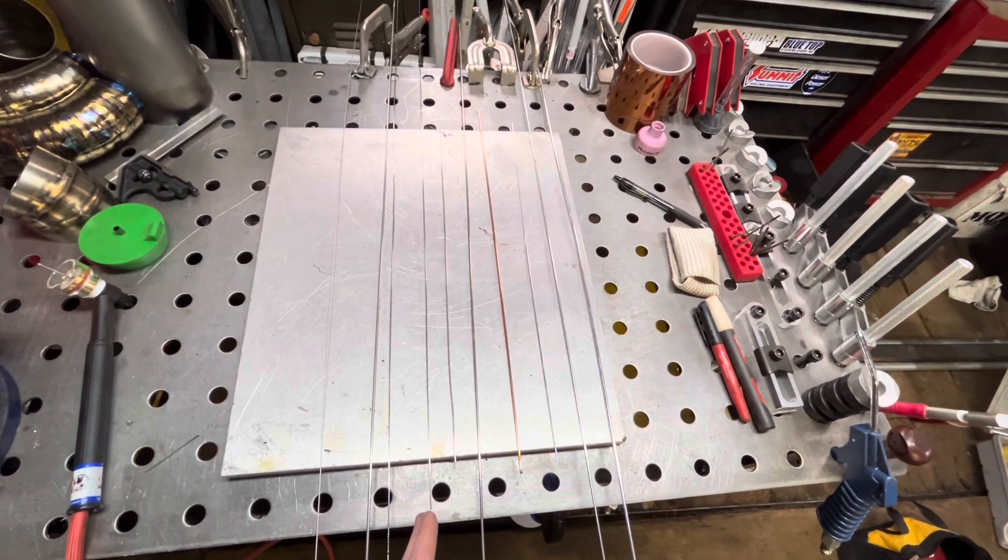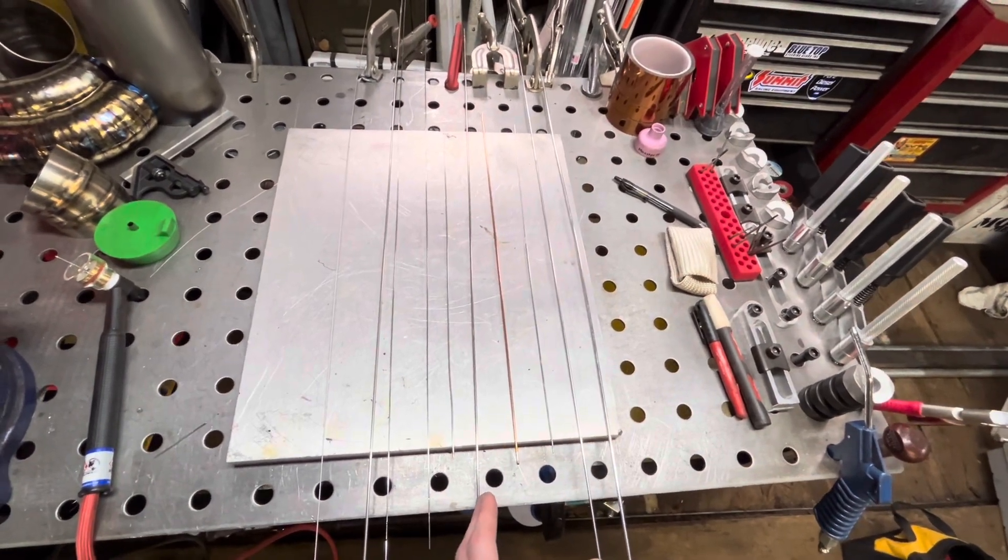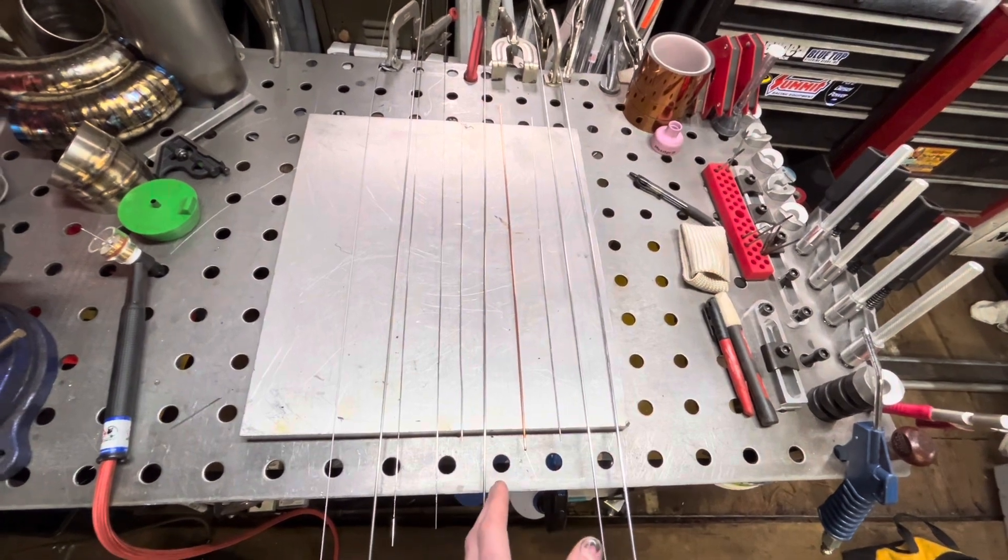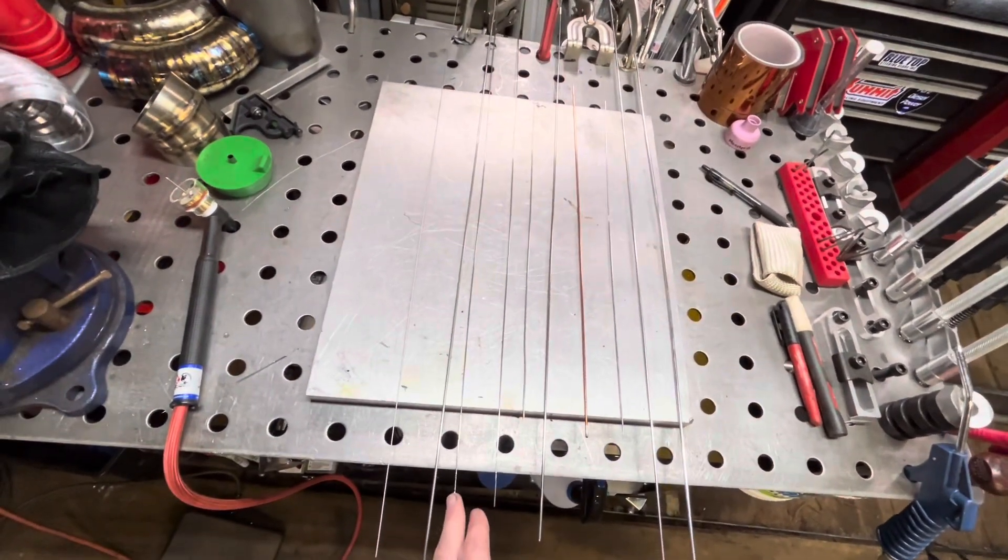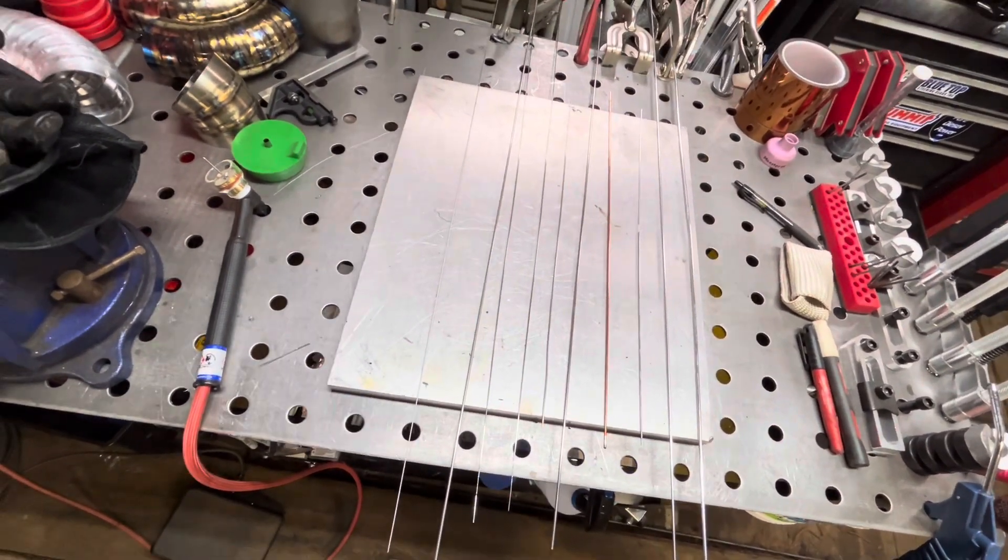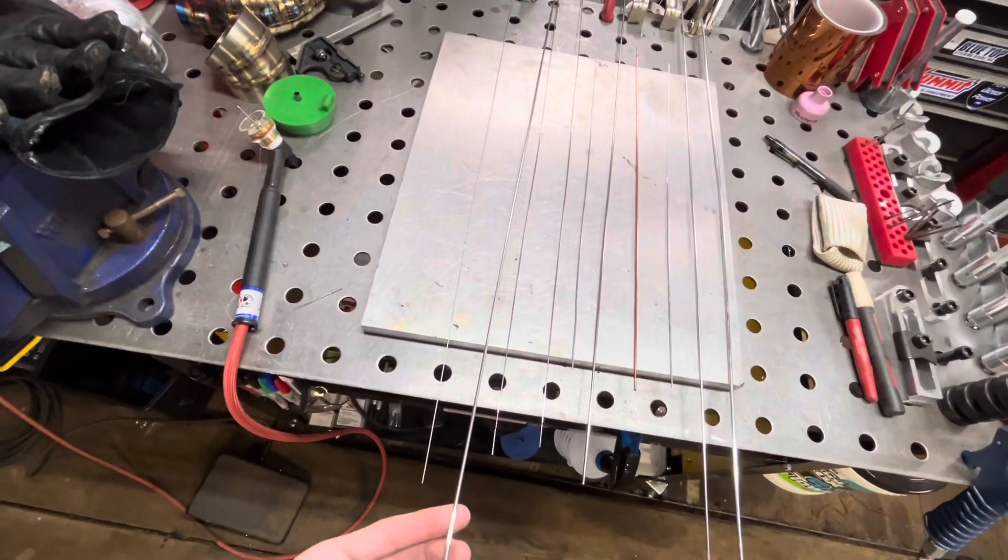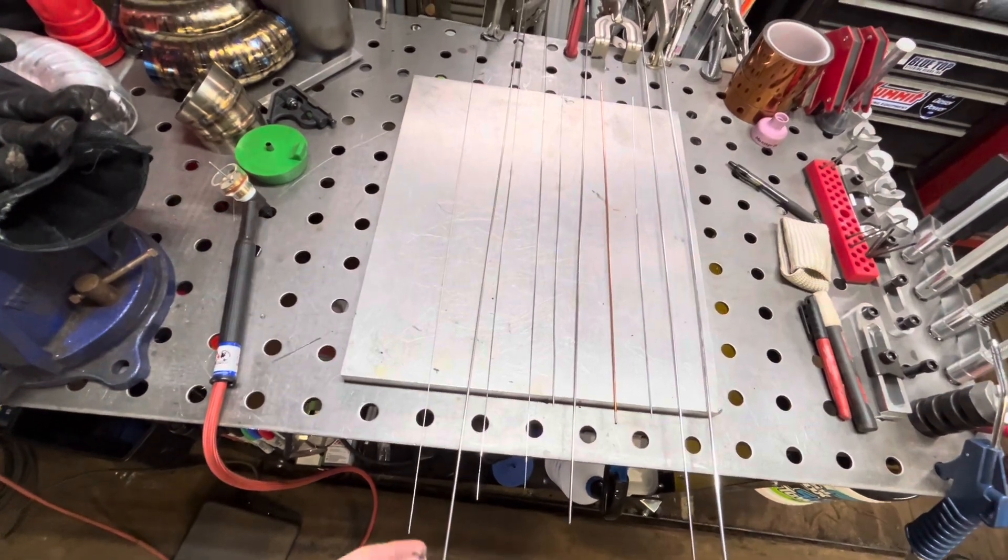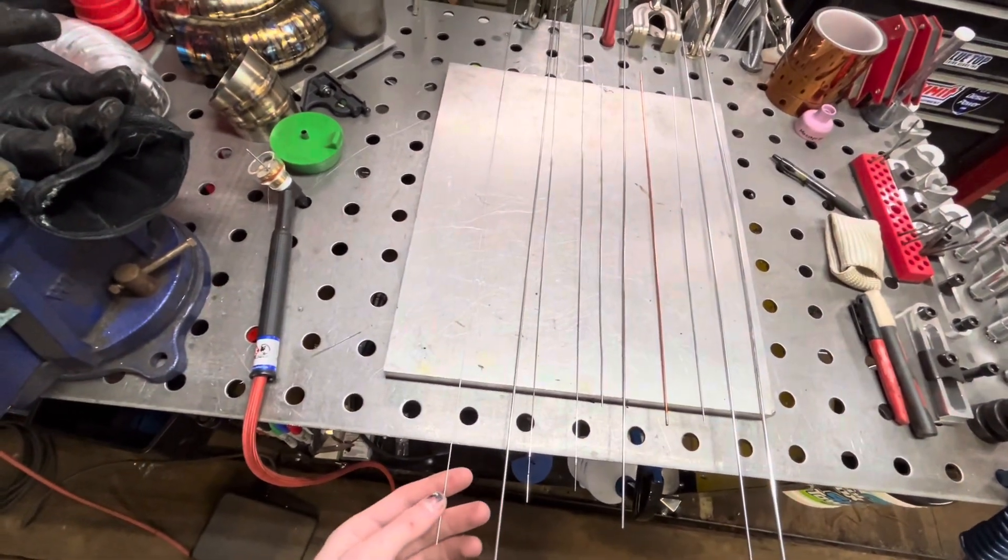We've got stainless rods, stainless for 304 right here. This rod is for 321. This rod here is for welding mild to stainless, and this rod here is titanium.